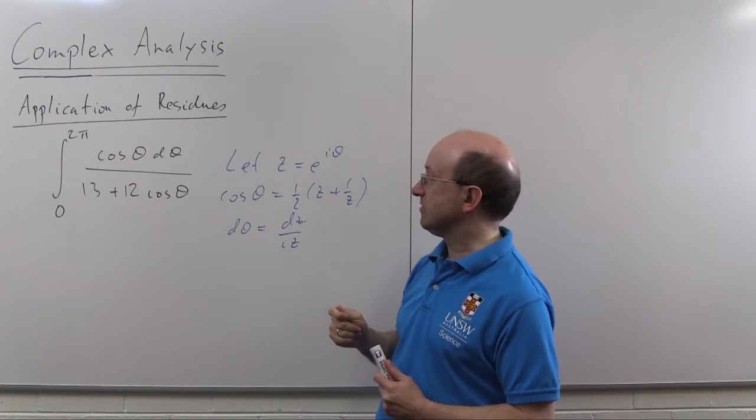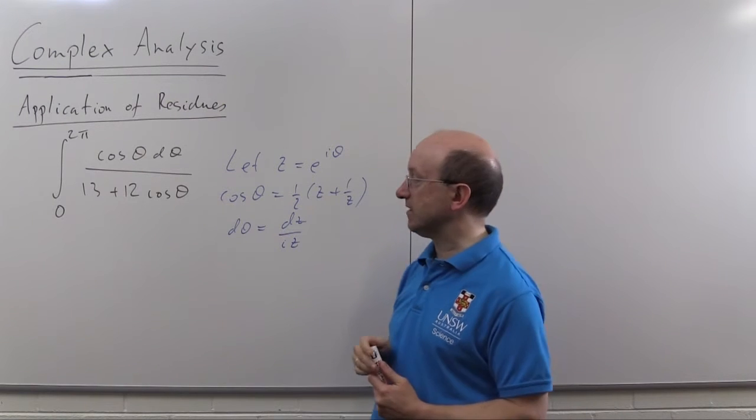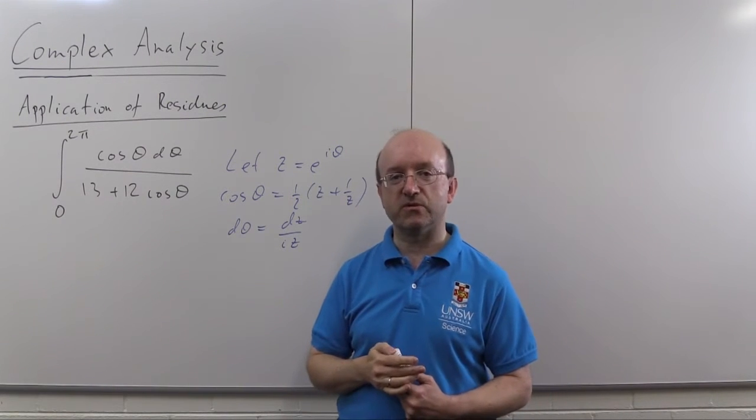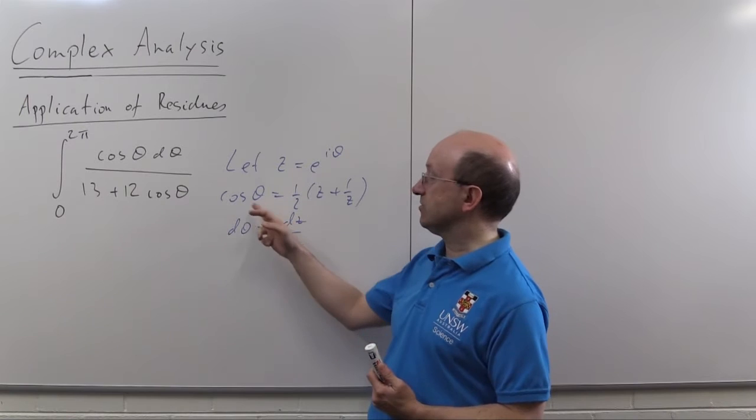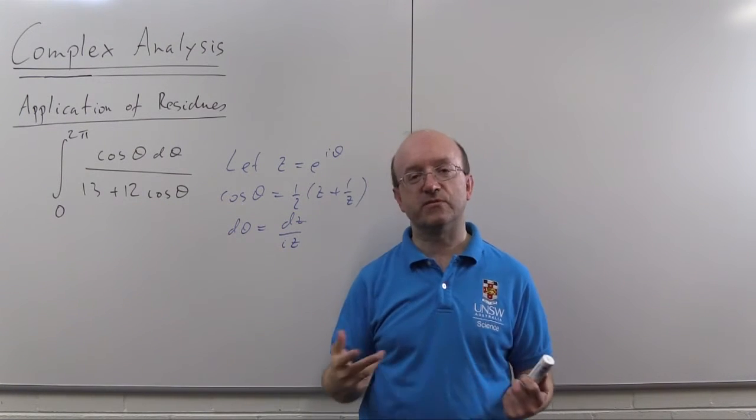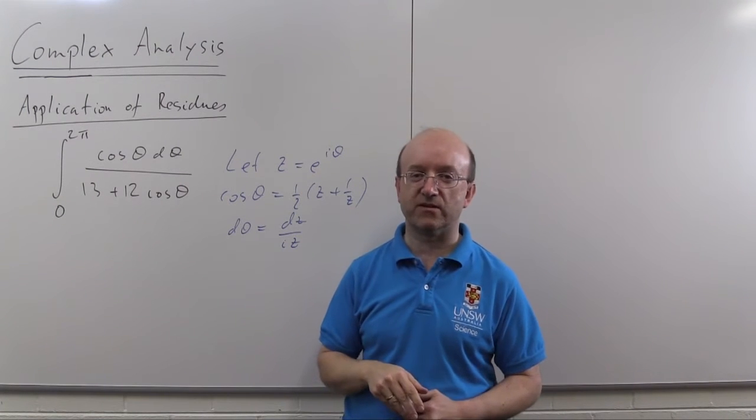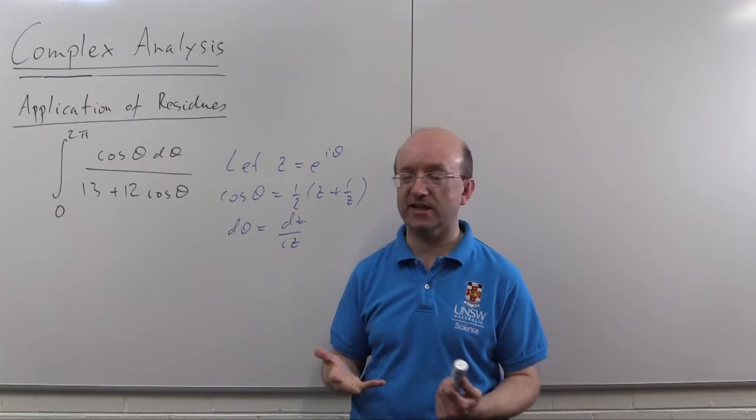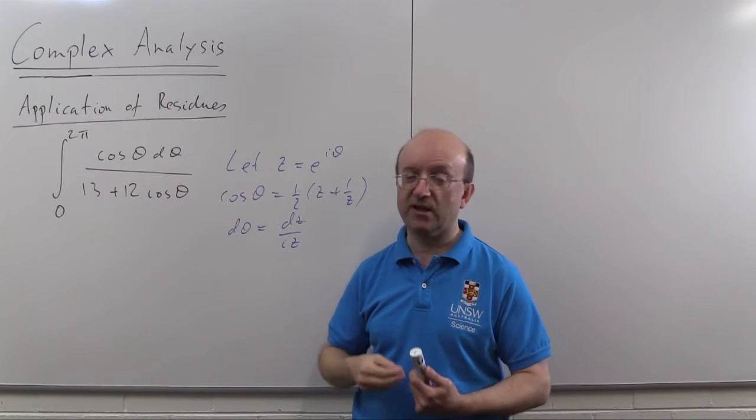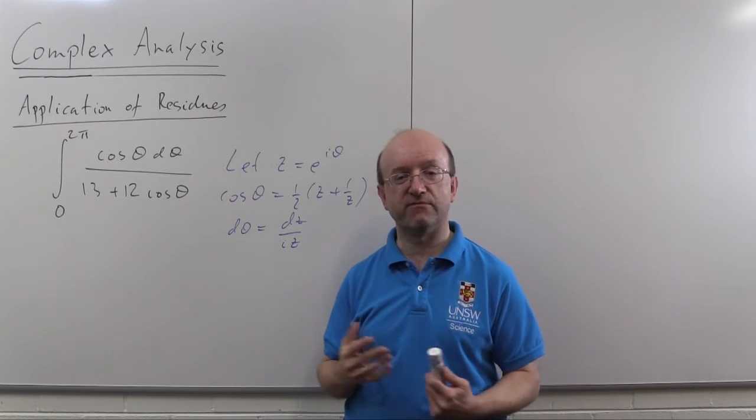The advantage of that is that we'll just have e to the i theta on the numerator, so there won't be an extra pole coming from the numerator. If I just substituted in cos theta is this, I'm going to get poles from the denominator and I'll have another pole at zero, that's an extra residue to calculate. The whole purpose of this technique is to do as little work as possible, so we don't want to calculate extra residues if we don't have to.